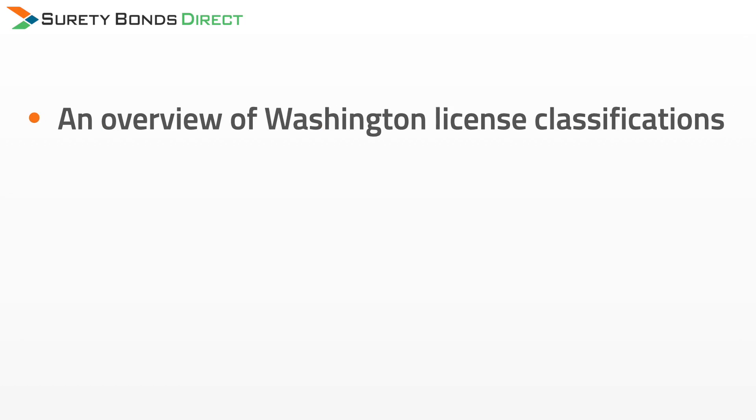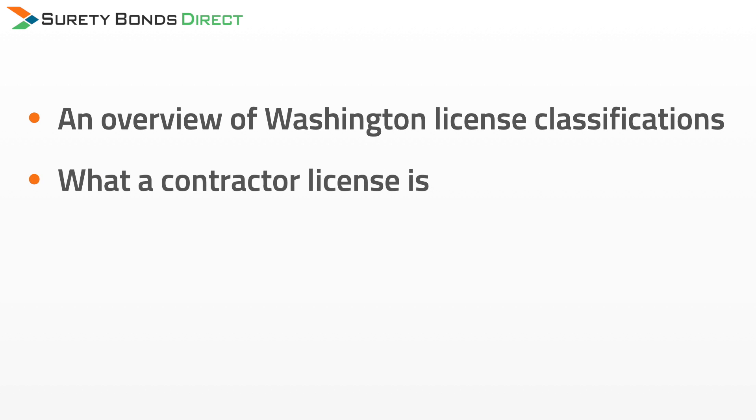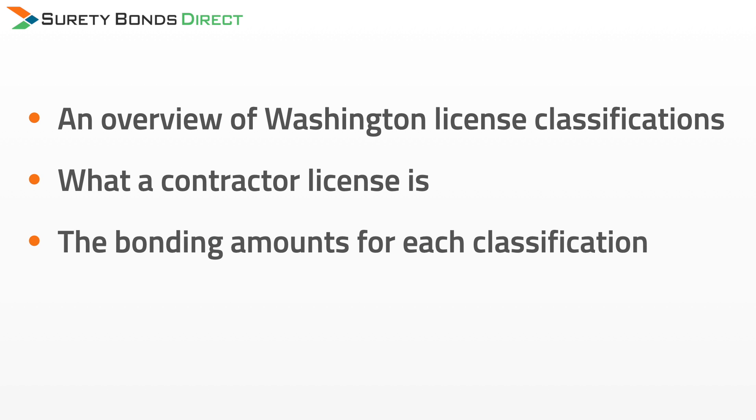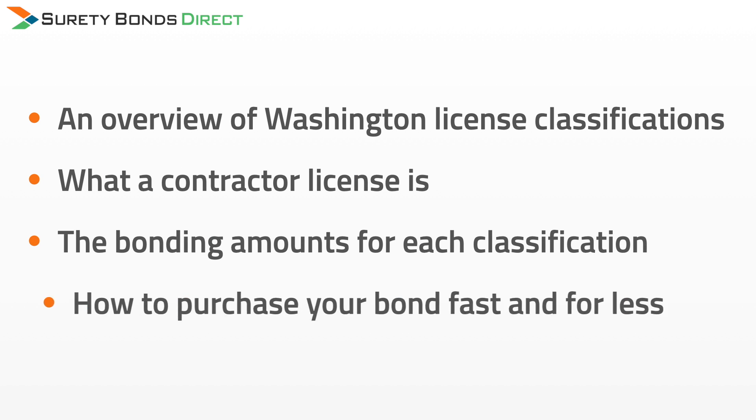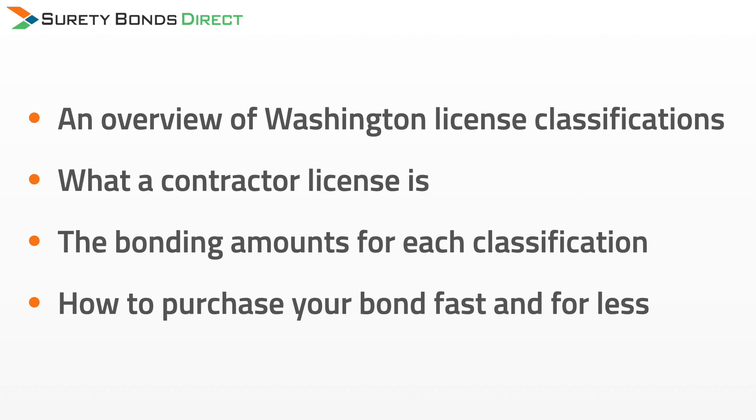The Washington Department of Labor and Industry requires all contractors to be bonded. This means that you must purchase a surety bond, in this case called a contractor license bond. In this short video, I'm going to help you understand the overview of Washington license classifications, what a contractor license bond is, the bonding amounts for each classification, and how to purchase your bond fast and for as little as possible.